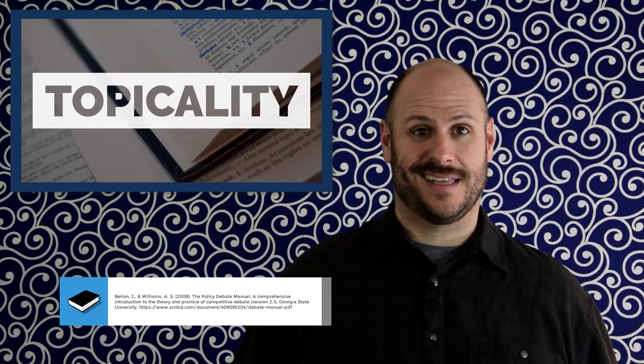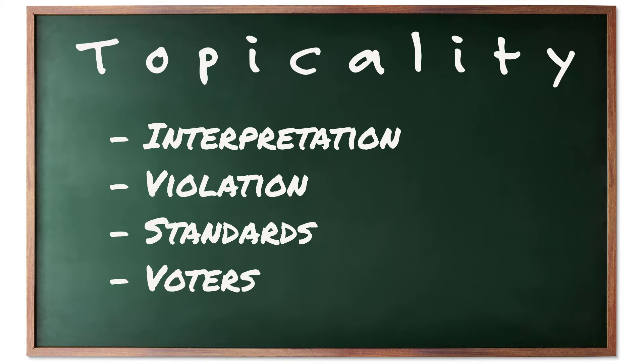Now that you have a working idea of what topicality is, let's get into how to run it. Topicality, like most procedural arguments, has four basic parts: the interpretation, the violation, standards, and voters. Let's talk about each of them.